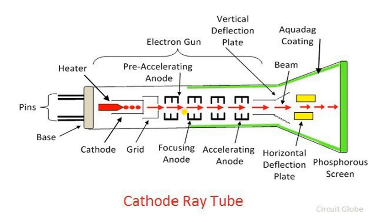Suppose electrons are coming and repelling each other — some come out of the grid. No matter if they come out, the anodes will also provide path. If electrons come outside of the anode, what the aquaduct coating will do — that green color outer layer — it is called aquaduct coating. If electrons come out of the anode, the aquaduct coating repulses the electrons and sends them back to their path, directing them toward their goal.